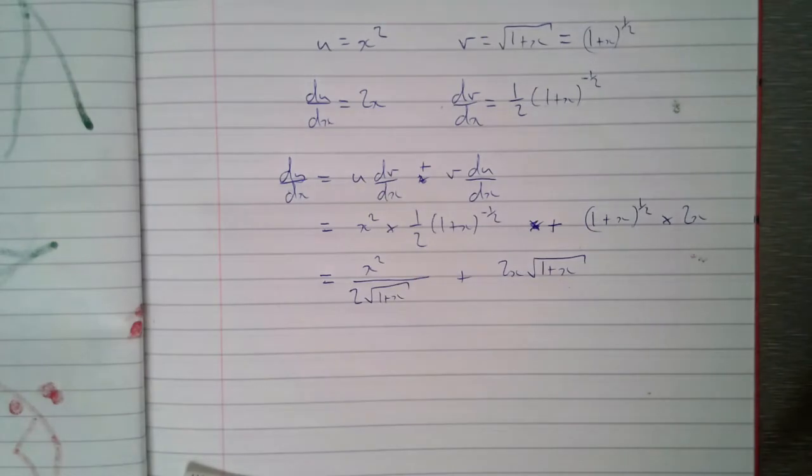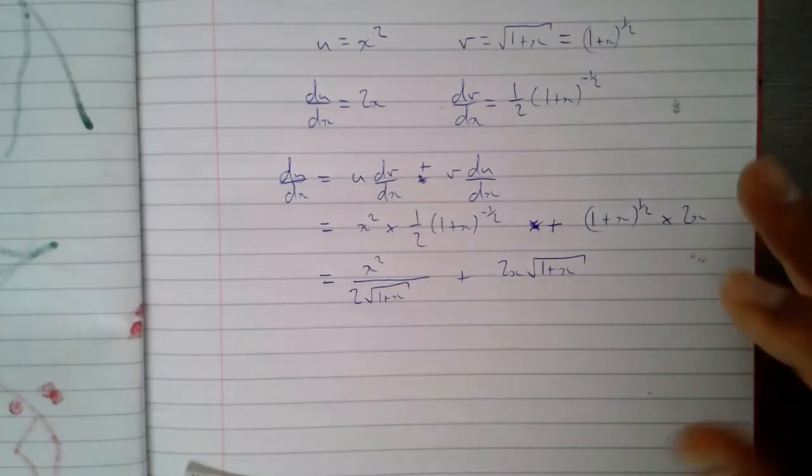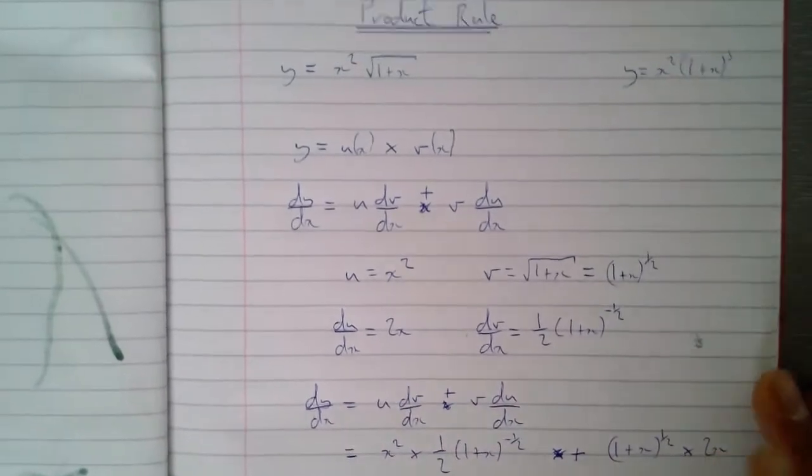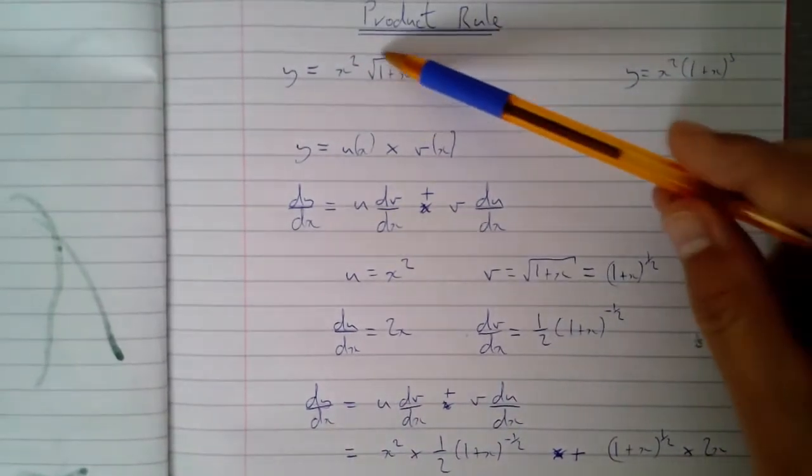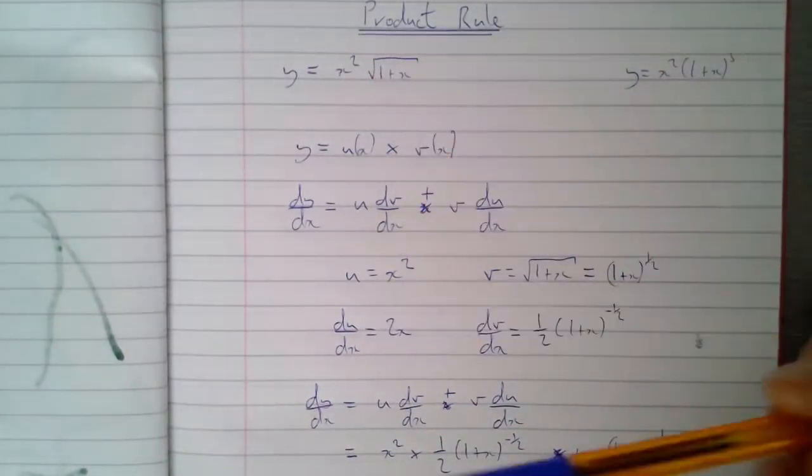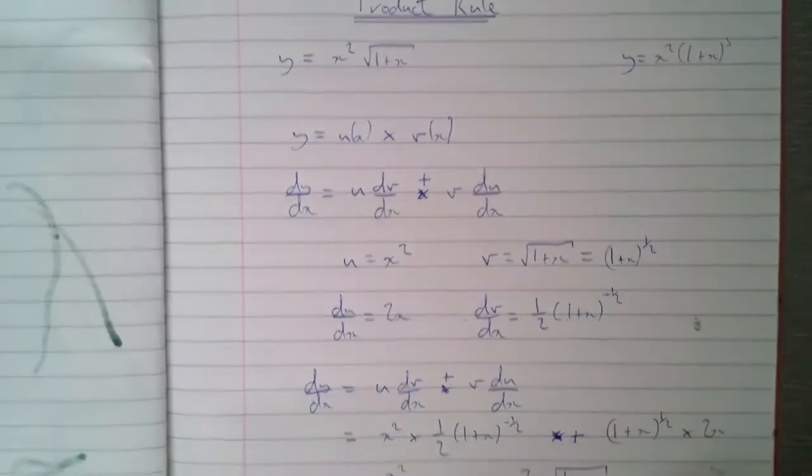However, when you're doing this sort of thing you're rarely going to come across a question which just says differentiate this thing using the product rule and that being all you need to do. It's going to be trying to find the gradient of something most probably. And it will say find the gradient of this at a certain point, and you'll look at it and say oh, it's a product of functions so I need to use the product rule.